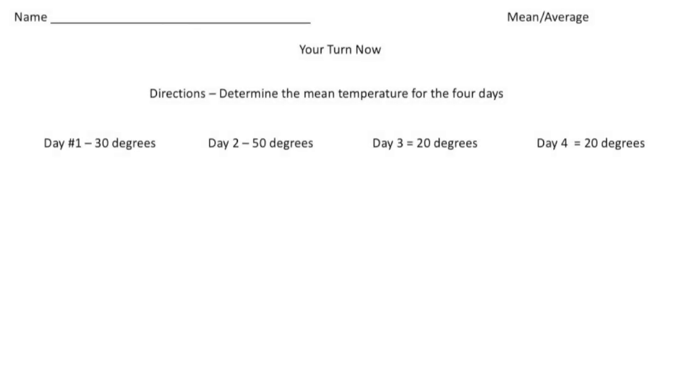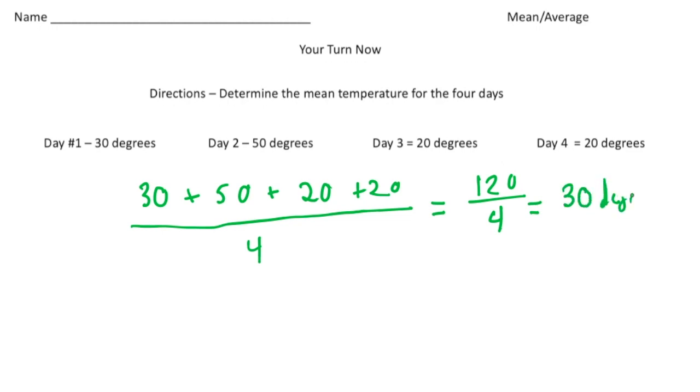Alright, welcome back. Let's do these practice problems. For this problem you determine the mean temperature for the four days. So really we just want to find what the average temperature was. So we have 30 degrees day one, 50 degrees day two, 20 degrees day three, and 20 degrees day four. So I'm going to add up these four amounts: 30 plus 50 plus 20 plus another 20. Now I'm going to take that sum, I'm going to divide it by the number of days which is 4. So I know that 30 plus 50 is 80, plus 20 is 100, plus another 20 is 120. And when I do 120 divided by 4 I get 30. So the average was 30 degrees for the four days. And there it is. Alright, how'd you do?